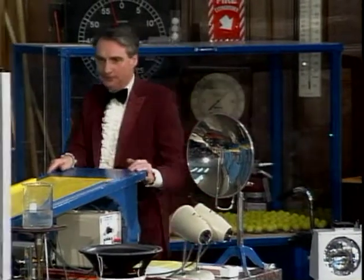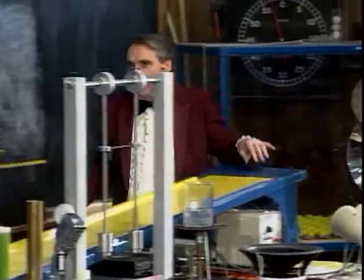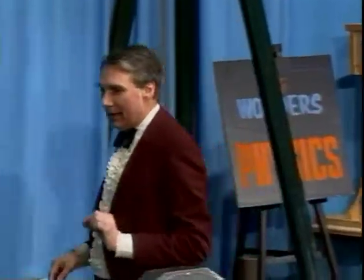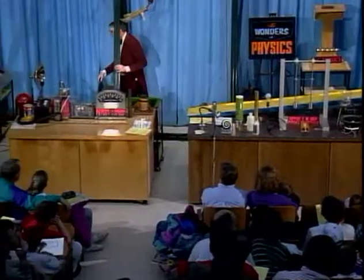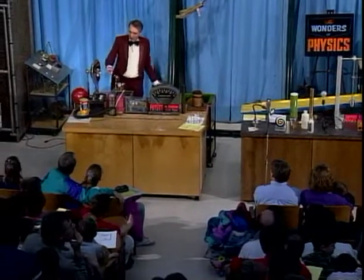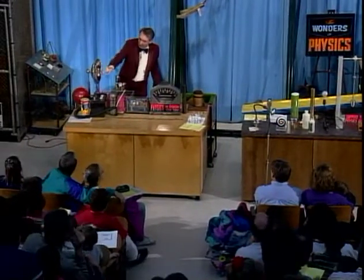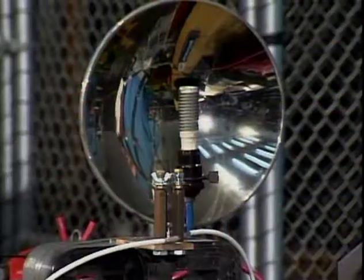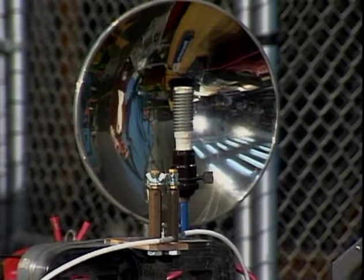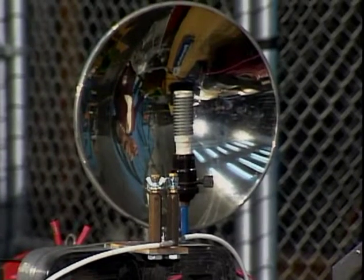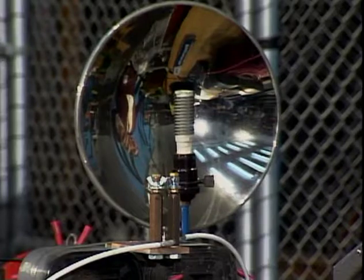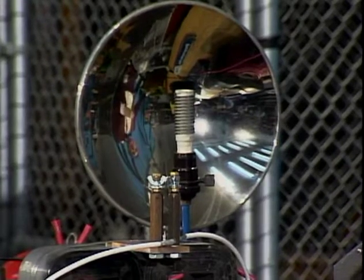The next thing I want to show you involves another example of transforming electrical energy into heat energy. Over here I have a little heating coil that's connected to a plug that goes in the wall back here, and I've turned it on. An electric current will pass through that coil, the coil will get hot, and the electric energy will be transferred to heat energy.